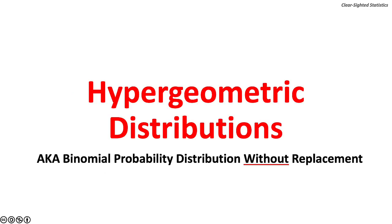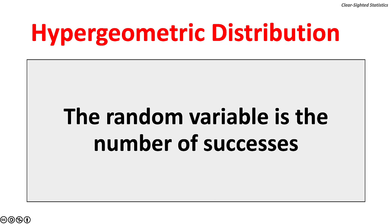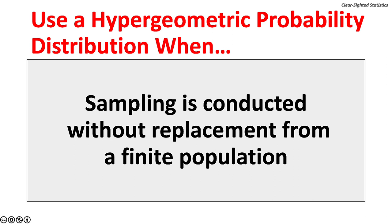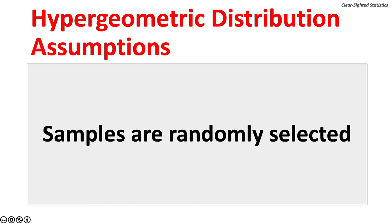The hypergeometric probability distribution is also known as a binomial probability distribution without replacement. As with the binomial distribution, it has two mutually exclusive outcomes — success or failure — so the experiment is binary. Unlike the binomial distribution, the outcomes for a hypergeometric distribution are dependent; probabilities change because outcomes of one trial affect subsequent outcomes. Use a hypergeometric distribution when sampling is conducted without replacement from a finite population, samples must be at least 5% of the population, and samples are randomly selected.